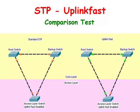Uplink Fast works only when the directly connected primary link goes down. When the primary link from the root switch to the access layer switch went down, the access layer switch detected the loss of connectivity and transmitted dummy multicast packets of all the downstream MAC addresses that it knew about to the blocked upstream switches, in order to update their CAM tables with the new switching route.